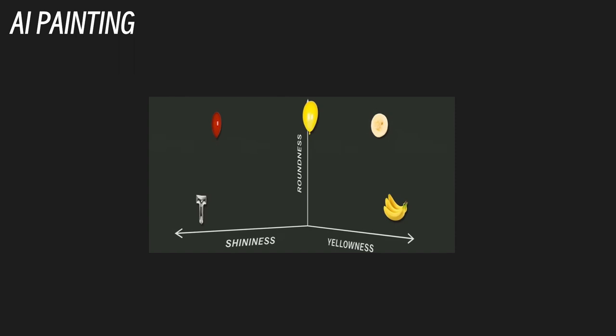Therefore, when we ask AI to create a piece of dog painting by Leonardo da Vinci, it will look at an intersection between the dimensions of the painting and the dog and use that as the starting point for creating the final image.